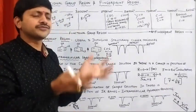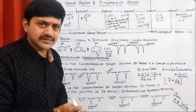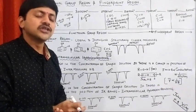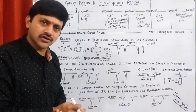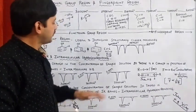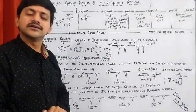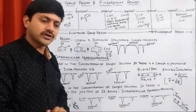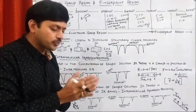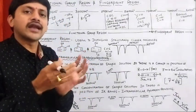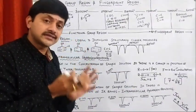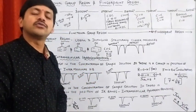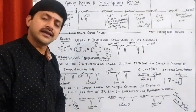Generally in most cases, hydrogen bonding is observed in alcohols. So in order to distinguish alcohols also, we use this particular approach. This is all about the functional group region, fingerprint region, and how we can distinguish inter and intramolecular hydrogen bonding in a sample.